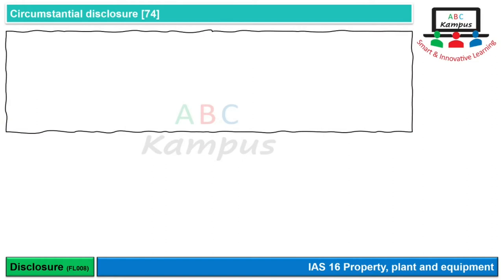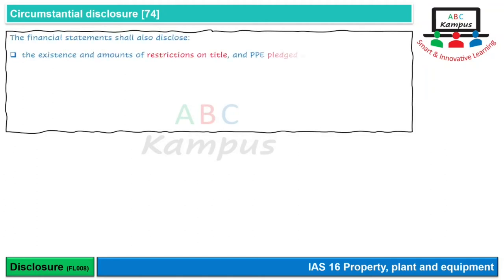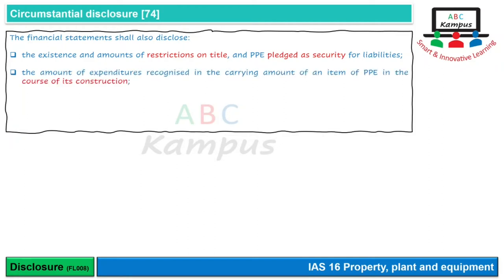Kuch disclosures hain jinhe hum specifically Circumstantial Disclosures kehte hain — agar aise circumstances exist karte hon to ye disclosures dene honge, warna nahi. For example: existence and amounts of restriction on title and property plant equipment pledged as security for liabilities — sirf wo entity batayegi jisne koi mortgage, charge ya pledge karwaya ho. Doosra: amount of expenditures recognized in carrying amount during construction, yaani capital work in progress — sirf wo entity batayegi jisne during the year construction ki hai.